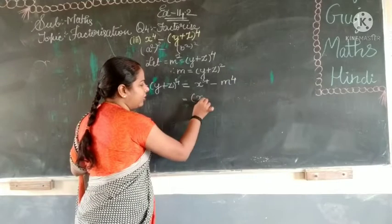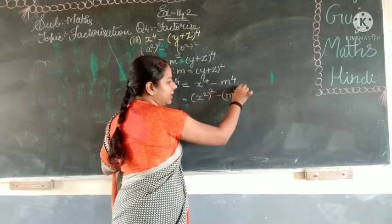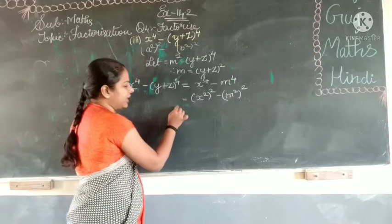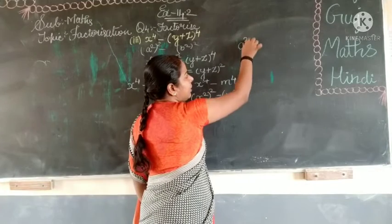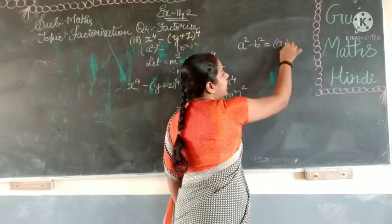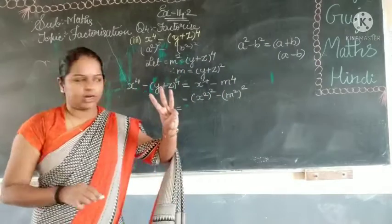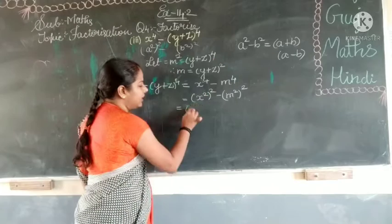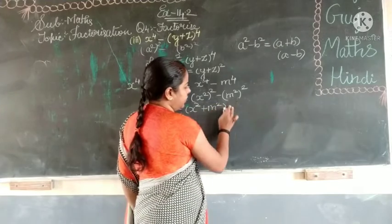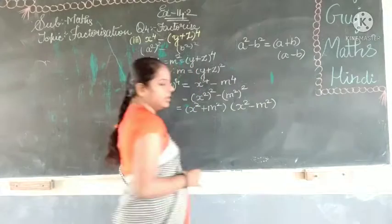So this we can write it as x to the power of 4 minus m to the power of 4 minus the whole square. Then what we will write the formula? That same identity 3 formula: a minus b square is equal to a minus b into a minus b. So what we will write here: x square plus m square into x square minus m square.